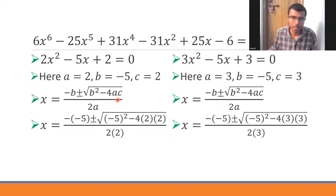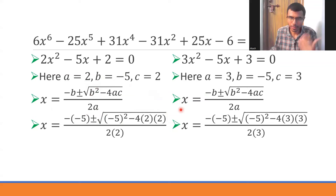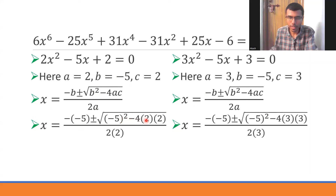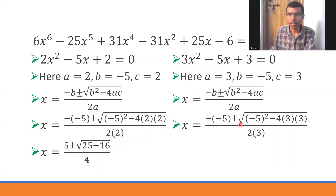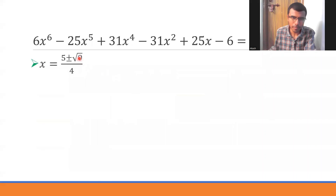For 2x² - 5x + 2 = 0: a=2, b=-5, c=2. Using the formula: x = [5 ± √(25 - 16)] / 4 = [5 ± √9] / 4 = [5 ± 3] / 4. So x = 8/4 = 2 or x = 2/4 = 1/2. For 3x² - 5x + 3 = 0: a=3, b=-5, c=3. x = [5 ± √(25 - 36)] / 6 = [5 ± √(-11)] / 6 = (5 ± i√11) / 6.